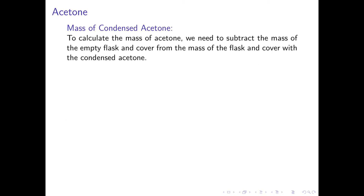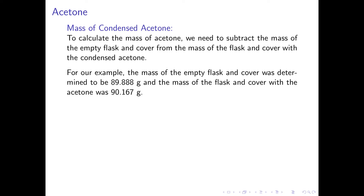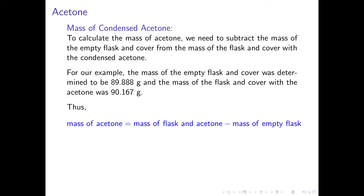The first liquid we will look at is acetone. To calculate the mass of the acetone, we need to subtract the mass of the empty flask with cover from the mass of the flask and cover with the condensed acetone in it. In this example, the mass of the empty flask and cover was 89.888 grams, and the mass of the flask with the cover and the acetone was 90.167 grams. Thus, the mass of the acetone is 90.167 grams minus 89.888 grams, giving a mass of 0.279 grams.